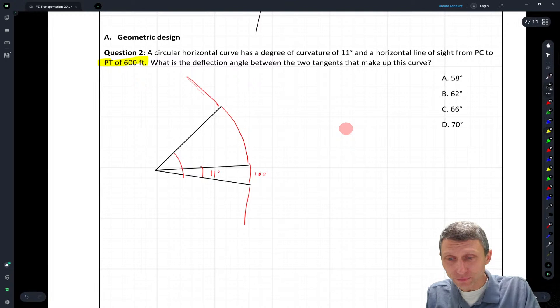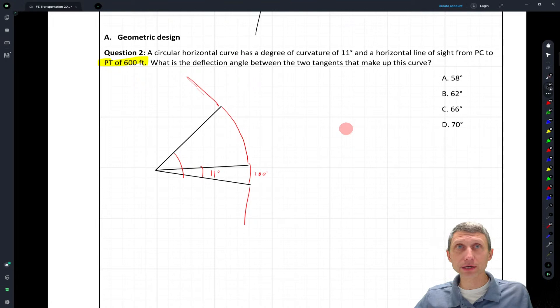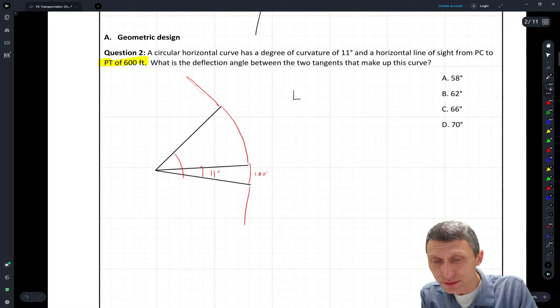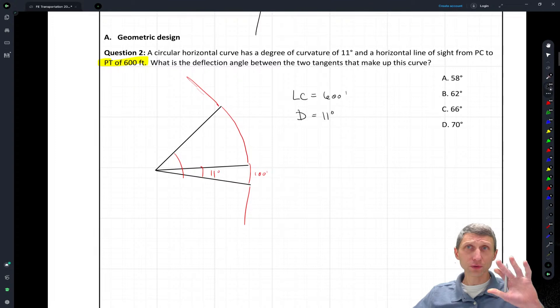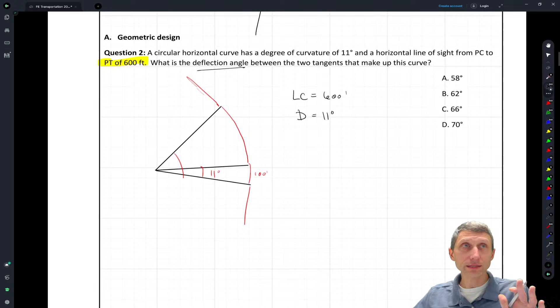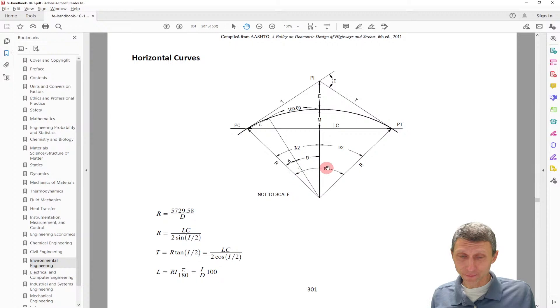So let's come back to our equations. What we have here is LC equals 600 feet, that's the chord length, and we have this degree of curvature of 11 degrees. So what we're trying to find is this deflection angle I. We're looking for something that relates I to D to LC. We do have kind of this equation that we have LC and I, but that doesn't give us D. But then what else do we have? We do have a radius here that will relate us. So this becomes kind of a two-step curve problem.